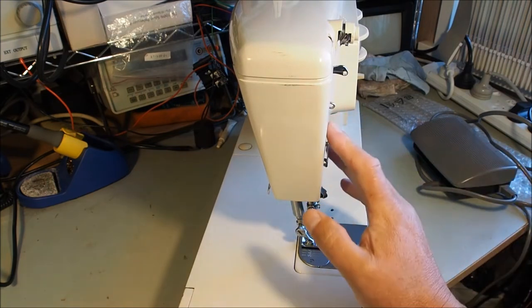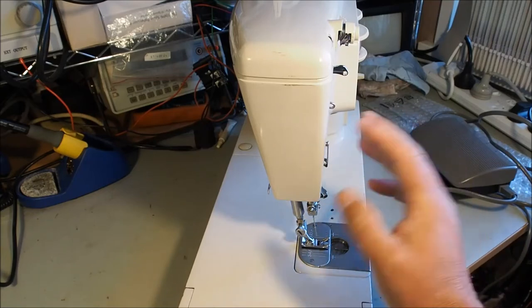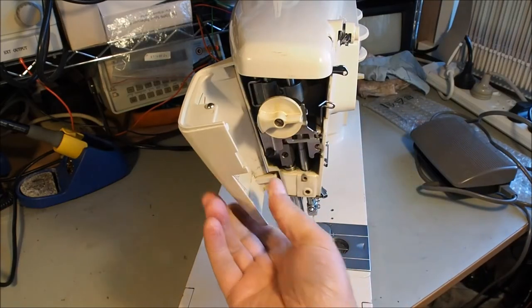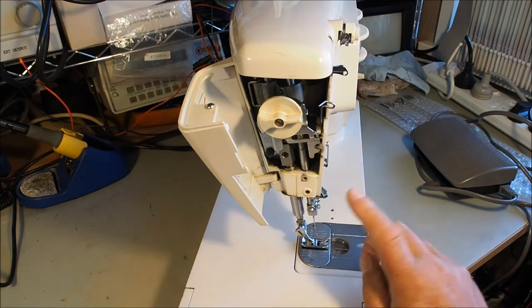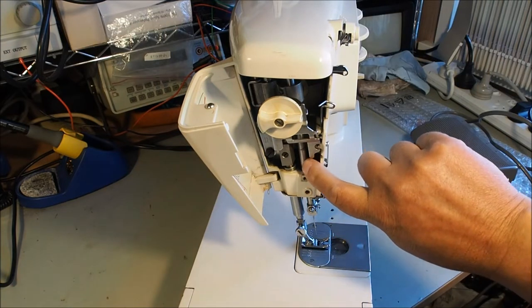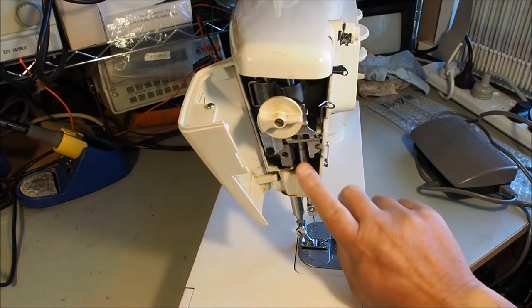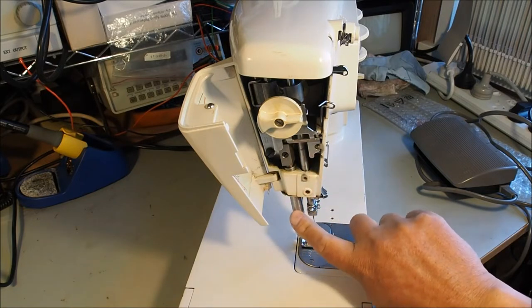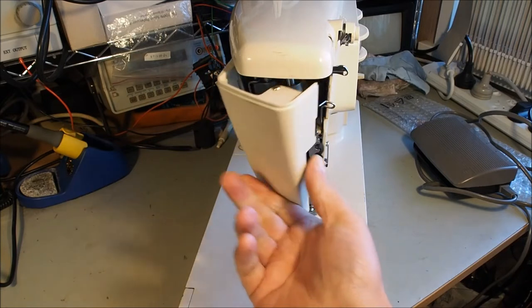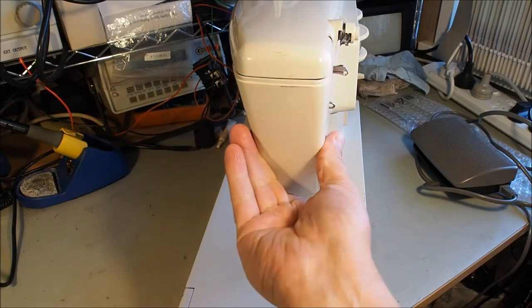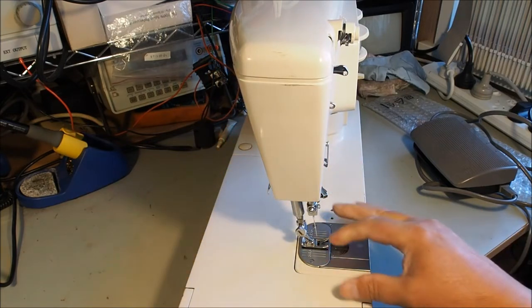I've also got a 726 Singer with the same setup. Earlier models had the slant-o-matic as well. Here you can see the needle bar on an angle, along with the presser foot bar. That was just for ease of accessibility and makes it easy to see.